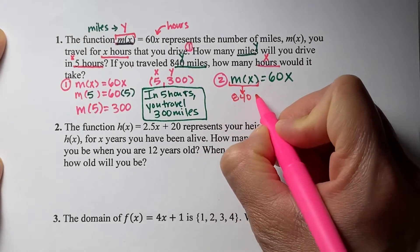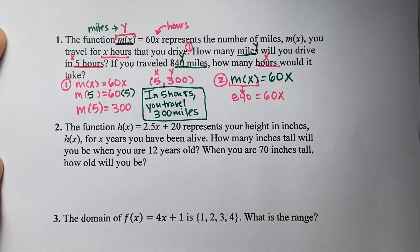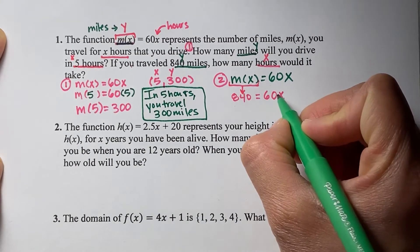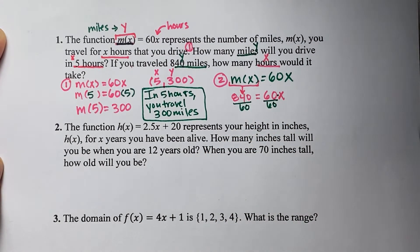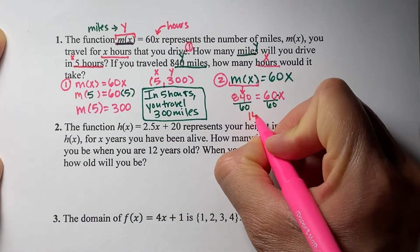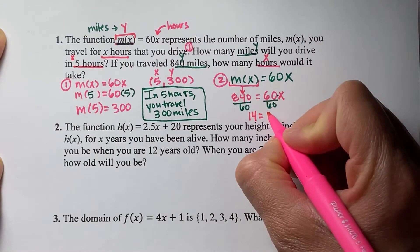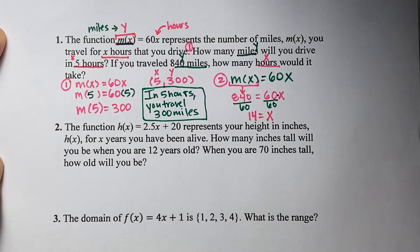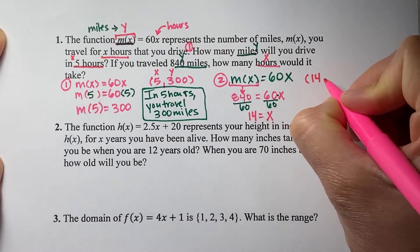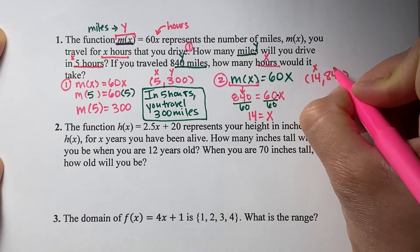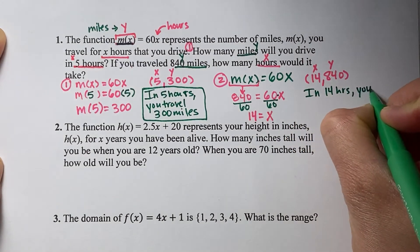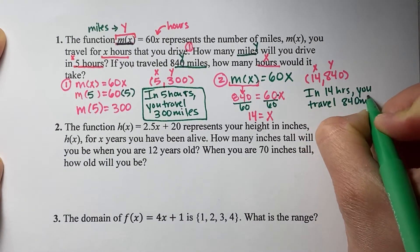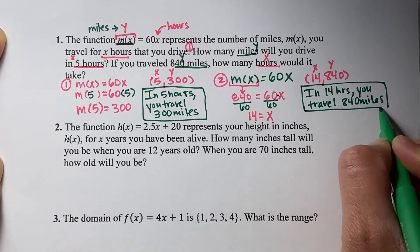Since y is 840, that is the same as m of x, so I plug in 840 for m of x: 840 equals 60x. To solve for x, I undo multiplication and divide both sides by 60. That gives 840 divided by 60 equals 14, so x equals 14. As a coordinate point that's (14, 840). In words: in 14 hours, you travel 840 miles.